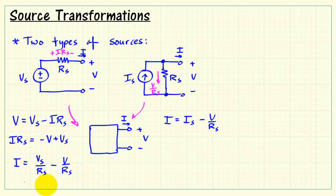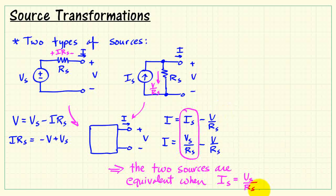And divide through by R sub S. I'll move this equation underneath the one on the right-hand side for easy comparison. We see the I's match up. The minus V over R S matches up, leaving us with this idea that if we want the circuits to be equivalent, then I S is equal to V S divided by R S.